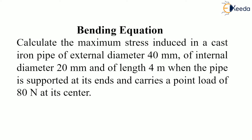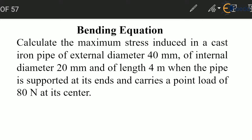This is a question of bending stresses where the cast iron pipe is given. External diameter is 40 mm, internal diameter is 20 mm, length is 4 meter, and there is a point load of 80 Newton at the center. We have to determine the maximum bending stress induced in the beam.